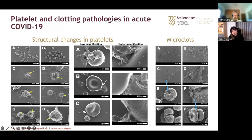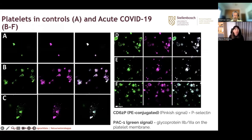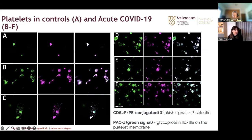We looked at clotting pathologies using scanning electron microscopy, and also examined acute COVID samples versus controls using fluorescent markers for platelet hyperactivation. We saw numerous hyperactivated platelets with p-selectin — a molecule that in healthy individuals is inside platelets, but can appear on membranes as adhesion receptors or be shed. We found all of these platelet hyperactivation patterns in our acute samples as well.